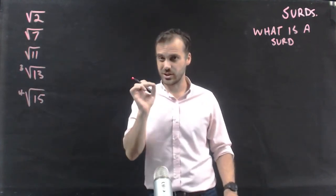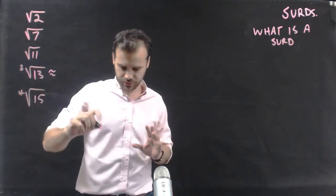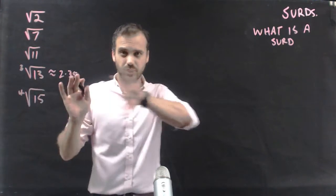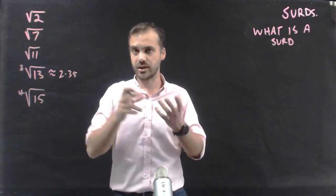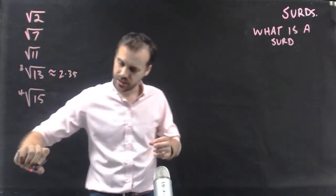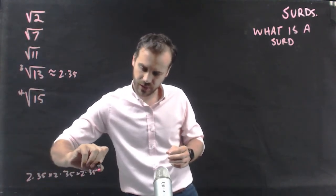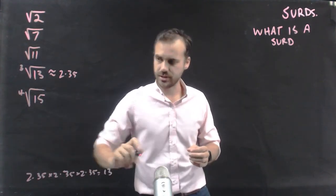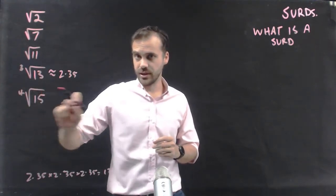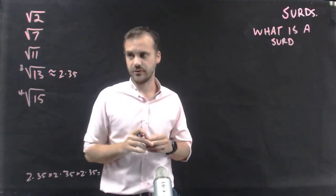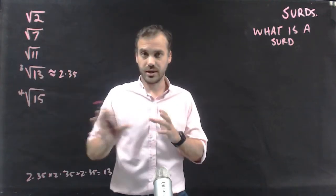I'll just put that into my calculator so you can see exactly what the cube root means. The cube root of 13 is approximately 2.35 — the decimals go on forever and ever. What we're saying is 2.35 times 2.35 times 2.35 is going to be equal to 13. Similarly, the fourth root of 15 is a number that multiplied by itself four times will give us 15. That's going to be an approximate answer, but you get the idea.